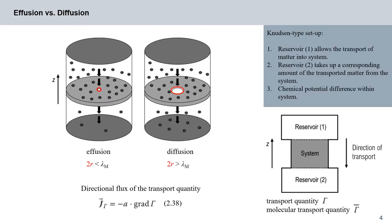We now come to the discussion of actual transport phenomena like effusion and diffusion, but also internal friction, thermal conductivity, and electrical conductivity of gases can be derived from these relationships. What's the difference between effusion and diffusion? On the left-hand side of the schematic we see a representation of effusion through a hole smaller in size than the mean free path.